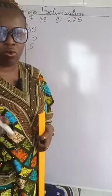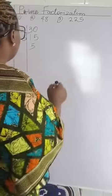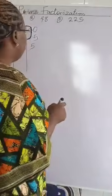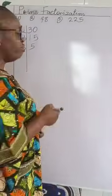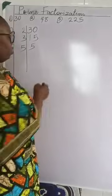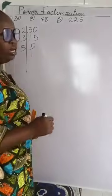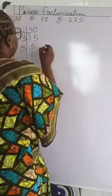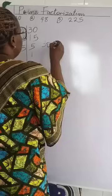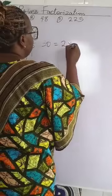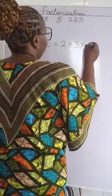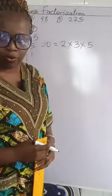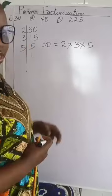3 times what number will give us 15? We'll have 5. We are going to continue dividing the quotient till it gets to 1 using the same process. So we use 5, because 2 and 3 cannot divide it again. We'll use 5, the smallest available prime. 5 going into 5 gives us 1. So the prime factorization of 30 is 2 times 3 times 5 — that is our answer, where 2, 3, and 5 are the prime factors of 30.